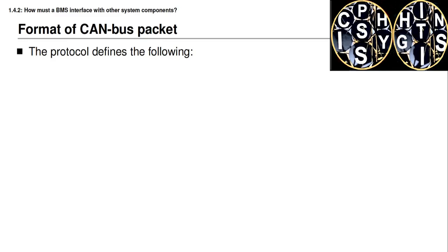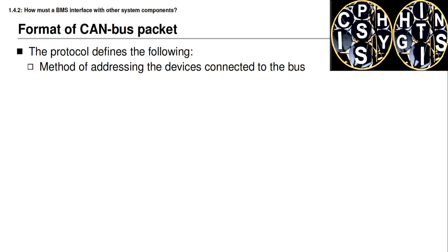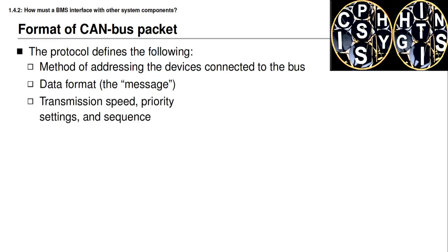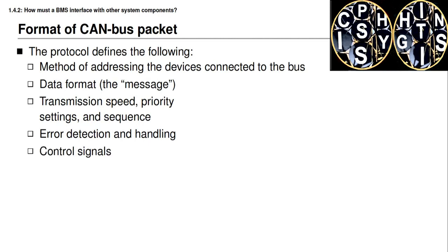The CAN bus protocol defines how to transmit information between two different entities connected on the bus. It gives a method to address messages to a specific destination device, defines the data format to be used, and defines transmission speed for both high and low speed aspects. It also defines priority settings, sequencing of messages and responses, how to detect and handle errors to get retransmissions, and some control signals.